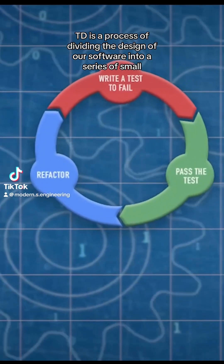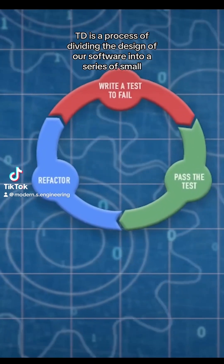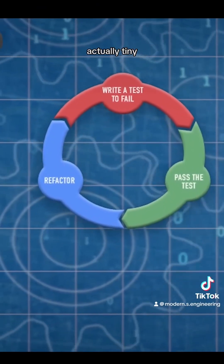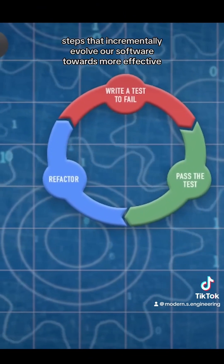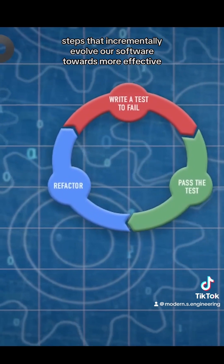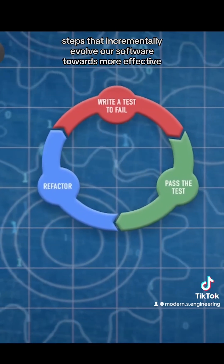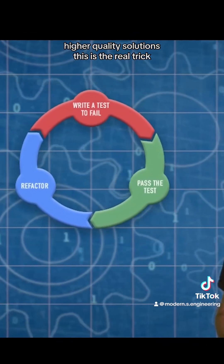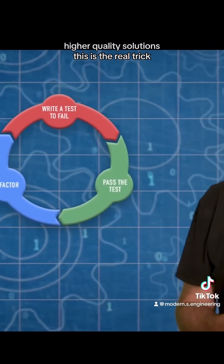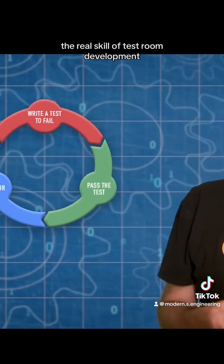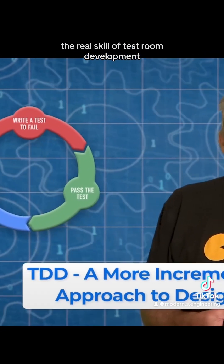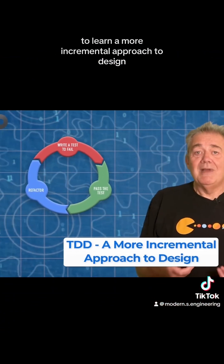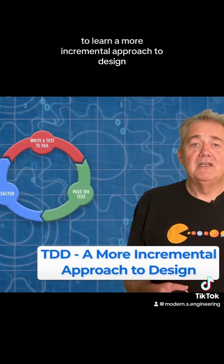TDD is a process of dividing the design of our software into a series of small, actually tiny steps that incrementally evolve our software towards more effective, higher quality solutions. This is the real trick, the real skill of test-driven development to learn: a more incremental approach to design.